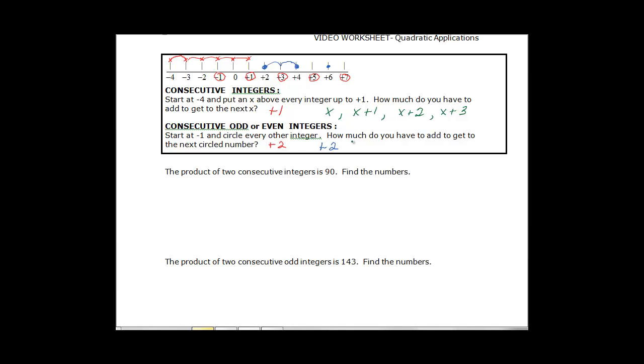If I'm doing the consecutive odd or even I start with X the next one would be X plus 2 and the next one I have to add 2 more so 2 plus 2 would be 4 and if I were to do the next one I have to add even 2 more so 4 plus 2 would be 6.